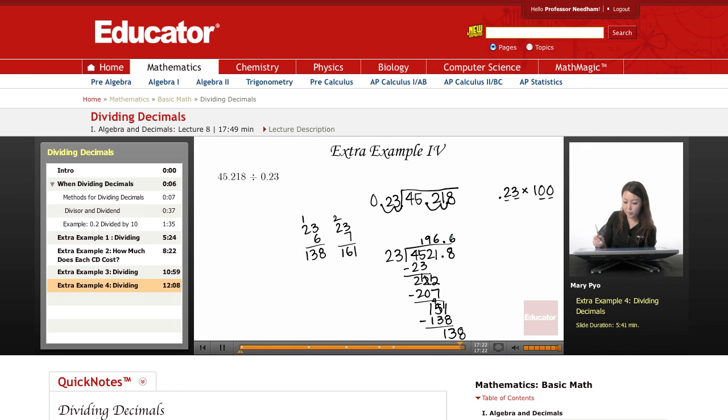Put a 6 there. So let me rewrite this right here, 138. And then 23 times 6 was what? 138, right? So if I subtract it, then I get 0. I have no more numbers to bring down. I have no remainder. So my answer is 196.6.